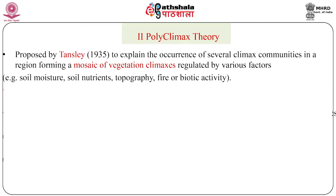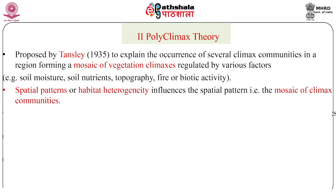The polyclimax theory was proposed by Tansley in 1935 to describe the occurrence of several climax communities in a region forming a mosaic of vegetation climaxes, which are regulated either by soil moisture, soil nutrients, topography, fire, or biotic activity. According to this theory, it is the spatial pattern or heterogeneity of habitats that influences the spatial pattern — that is, the mosaic — of climax communities.